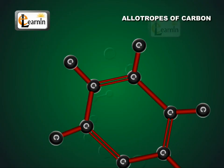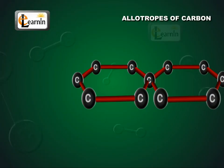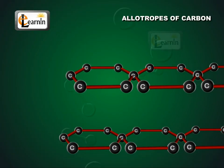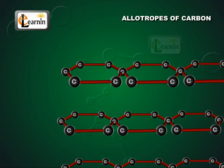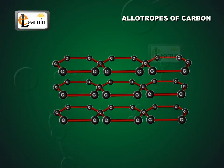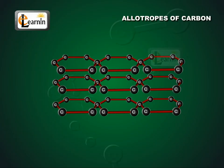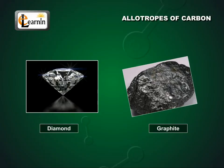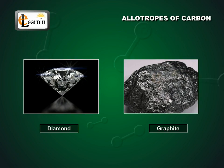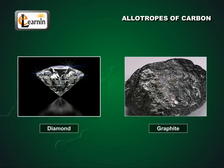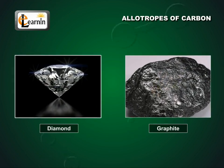Graphite structure is formed by the hexagonal arrays being placed in layers one above the other. These two different structures result in diamond and graphite having very different physical properties, even though their chemical properties are the same.